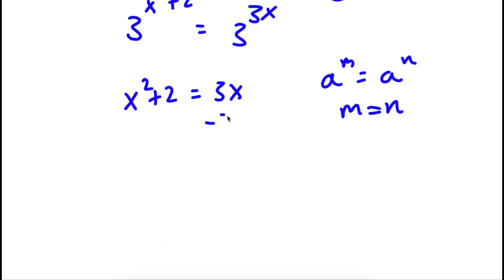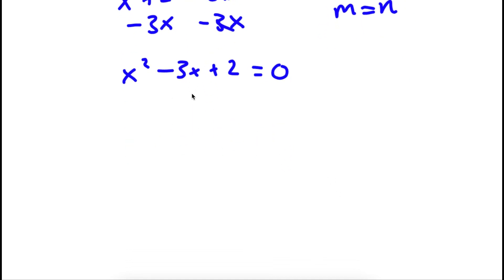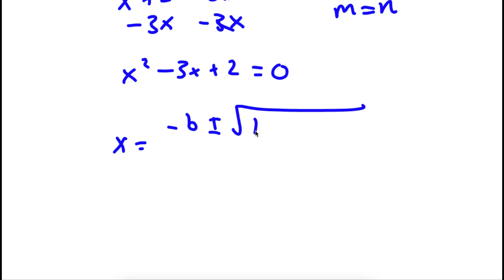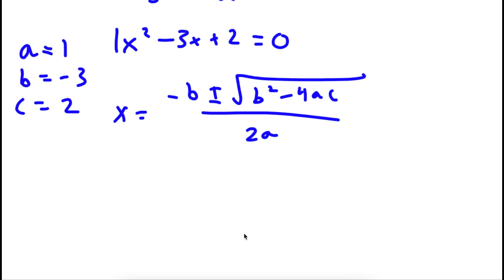To solve this, I'm going to subtract 3x from both sides. So now I have x squared minus 3x plus 2 is equal to 0. I have a quadratic equation, and to solve this I'm going to use the quadratic formula: negative b plus or minus the square root of b squared minus 4ac, all over 2a. In this case, a is equal to 1, b is equal to negative 3, and c is equal to 2.